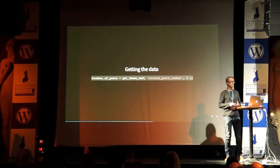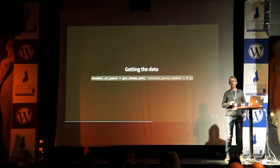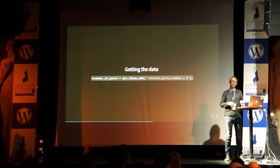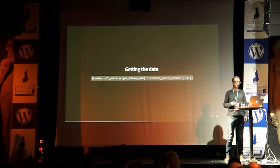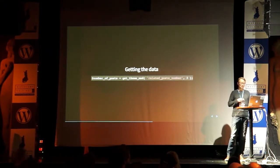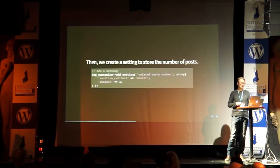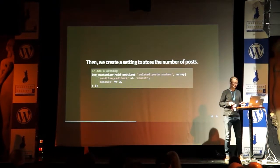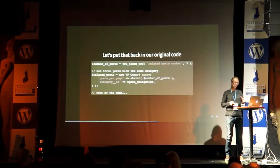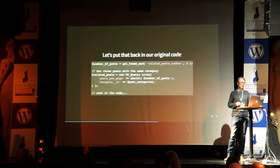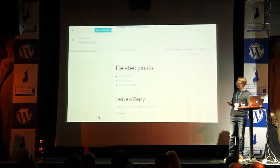Getting the data is straightforward. By default, each customizer setting is a theme mod, which is different from an option in that it's stored with the theme. So you can switch themes and the settings go along with the theme — changing a setting in another theme won't affect the setting in the previous theme. You can also use options by adding a type parameter to the setting, which is a good idea for plugins but maybe not for themes. Back in our original code, we get the number of posts, put it in the related posts query, and now we have a working customizer control.